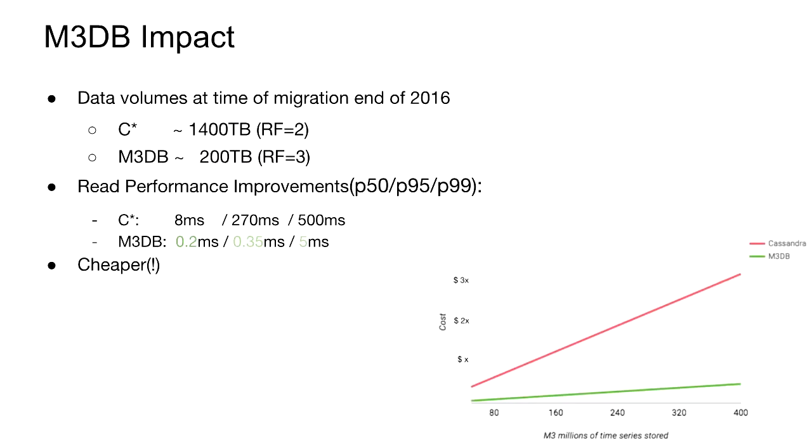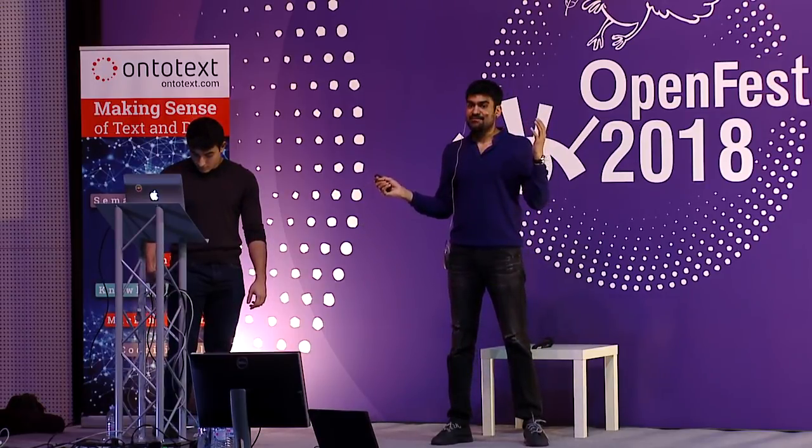When we rolled out towards the end of 2016, we were significantly cheaper in terms of data volume — from 1,400 terabytes to 200 terabytes, despite an RF increase, because of the improved M3TSZ compression. Our read performance improved substantially because we were serving out of memory rather than hitting disk like Cassandra. The cost improved dramatically. Both Cassandra and M3DB scale horizontally as linear lines, but the slope matters — the amount of money per series is substantially lower for M3DB.